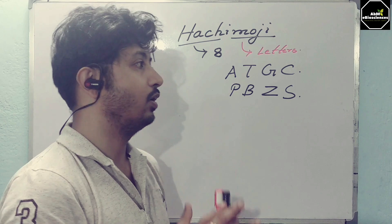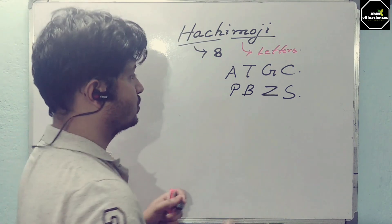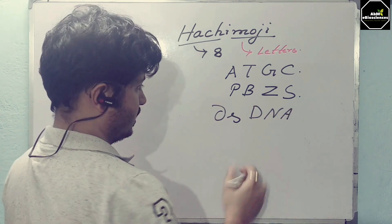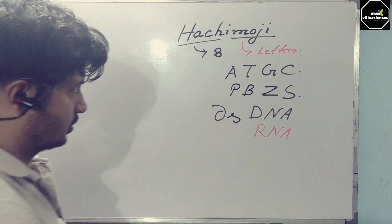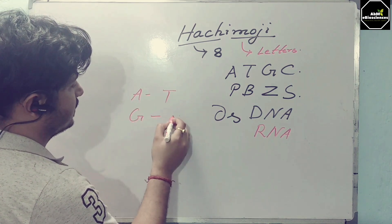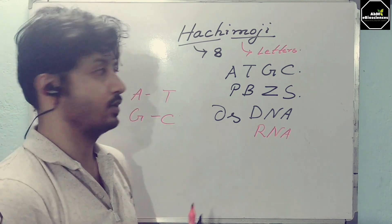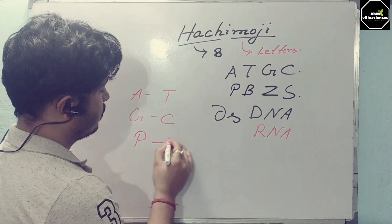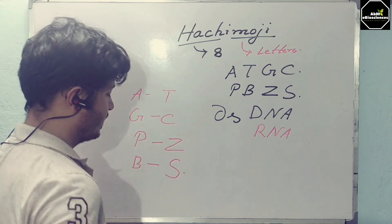...can be used—it is shown in that research article that it can produce double-stranded DNA. We know that A pairs with T, G pairs with C—this is known. But in this study, it says that P...